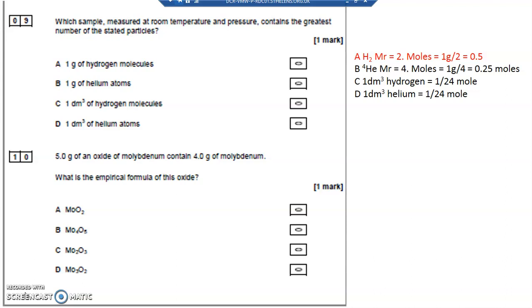The MR of hydrogen H2 is 2. So 1 divided by 2 equals 0.25 moles of hydrogen in answer A.